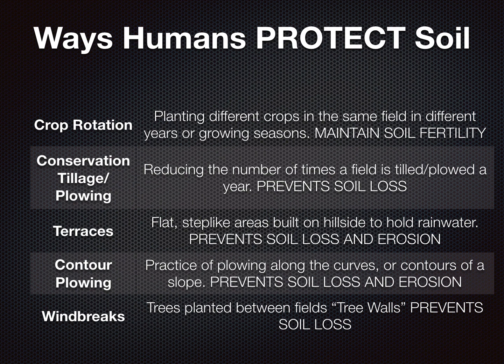Wind breaks have the same benefit as conservation tillage — they prevent soil loss. This is when you put plants like trees as walls so they can break up the wind, preventing the wind from taking the soil on farms.